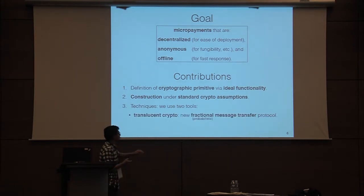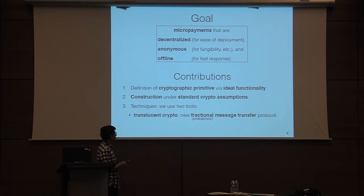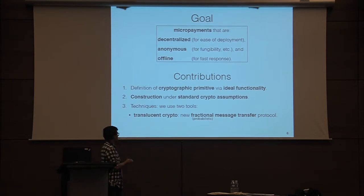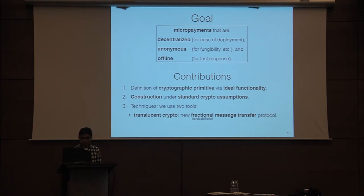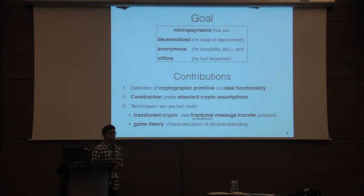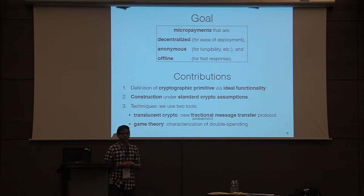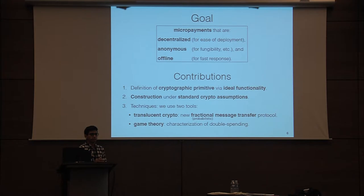To realize this construction we use two primary tools. The first is a fractional message transfer protocol, which is in some sense an analog of OT specialized to our setting. Prior constructions of FMT schemes were bundled under the umbrella called translucent crypto. As we'll see later, in our setting we can't prevent all double spending cryptographically, so we have to rely on the rationality of the agents in the system, and so we provide a tight characterization of double spending.